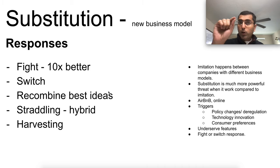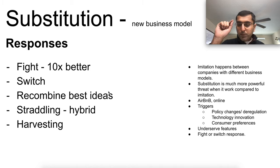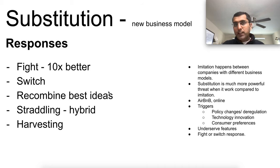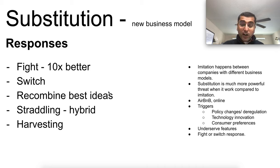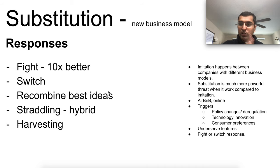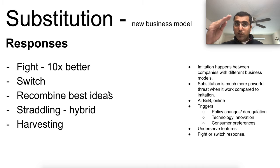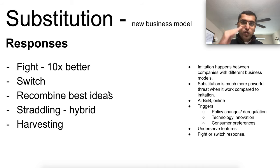Remember, substitution — if it works — is a much, much more powerful threat in the medium to long term compared to imitation, like Airbnb. There are many triggers for substitution: technology innovation, policy change, deregulation — for instance, India's demonetization was a huge boost for online payments. And the most important trigger is consumer behavior: as generations change, their consumption patterns differ, and if you don't keep that trend in mind, you will be disrupted through substitution.